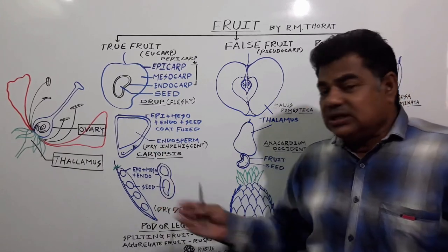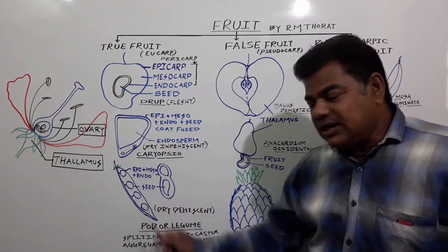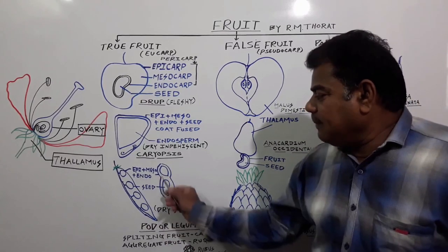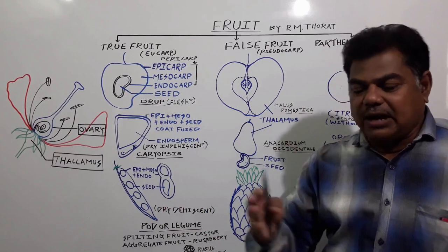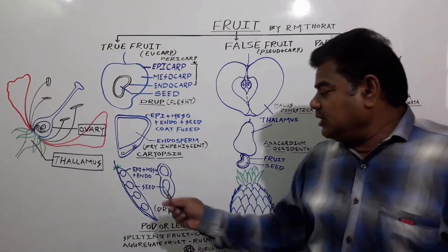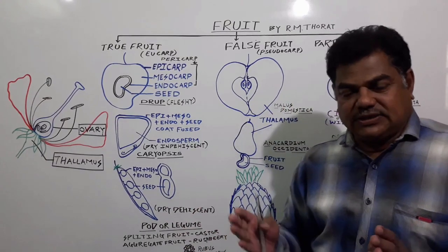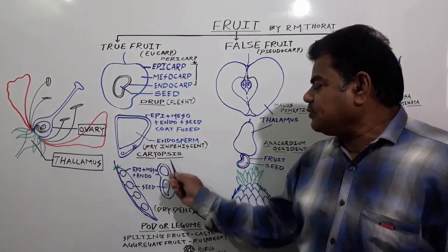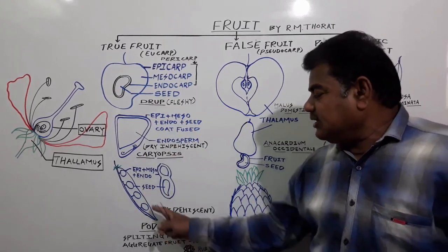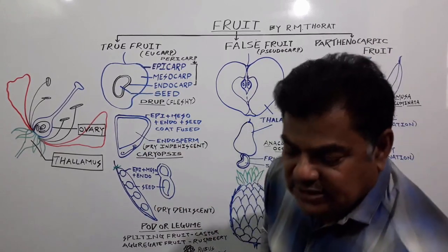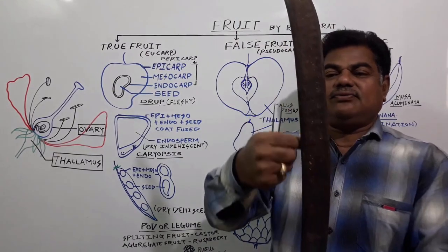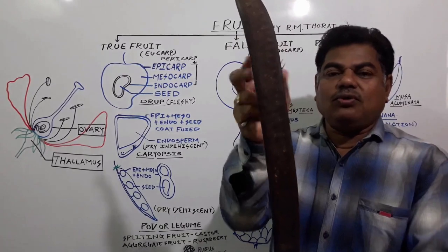In the case of Pisum sativum — mutter — and Arachis hypogea — shengdana — the pericarp (epicarp, mesocarp, and endocarp) gets fused and becomes dry, and the seeds inside the legume are separate from the pericarp. In the case of caryopsis, the epicarp, mesocarp, and endocarp are fused with the seed coat, whereas in legume the seeds and the pericarp are separate.